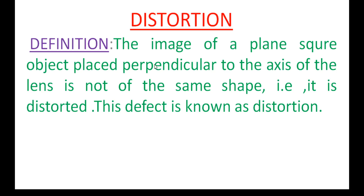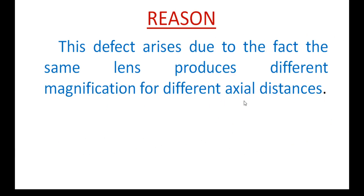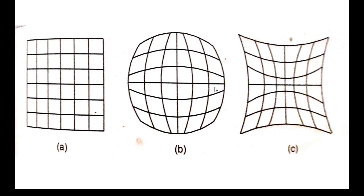The image of a plane square object placed perpendicular to the axis of the lens is not of the same shape — that is, it is distorted. This defect is known as distortion.